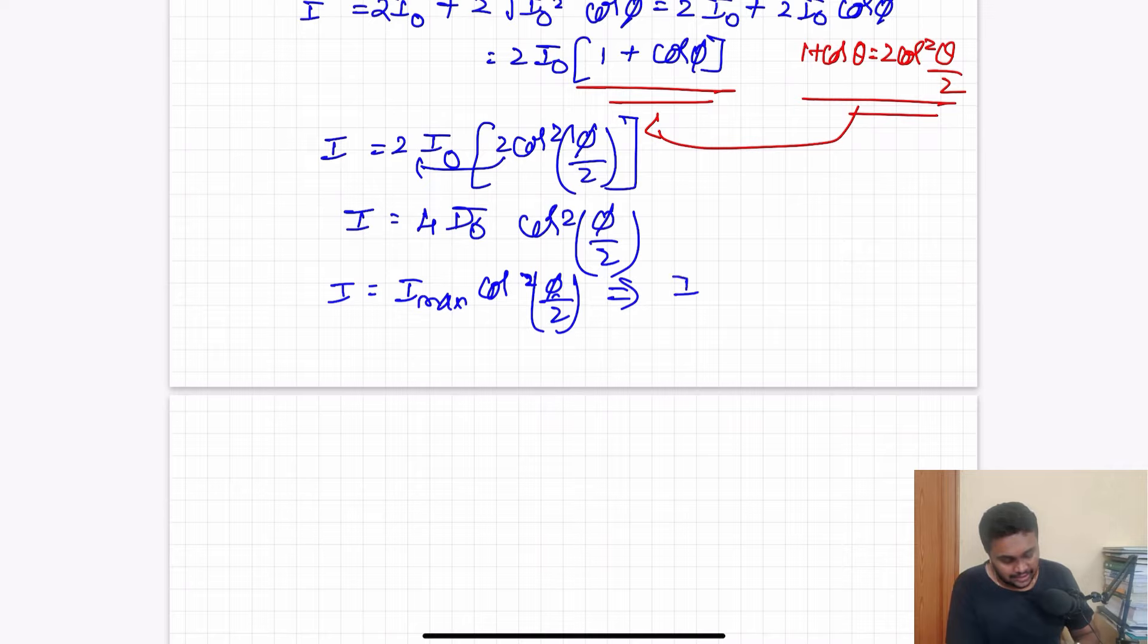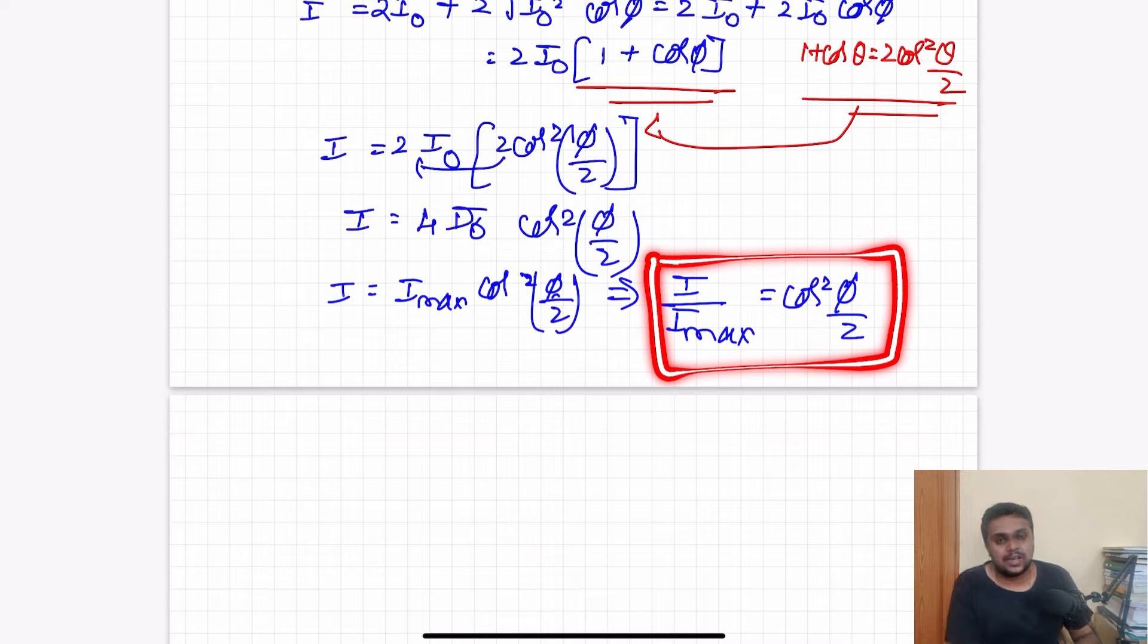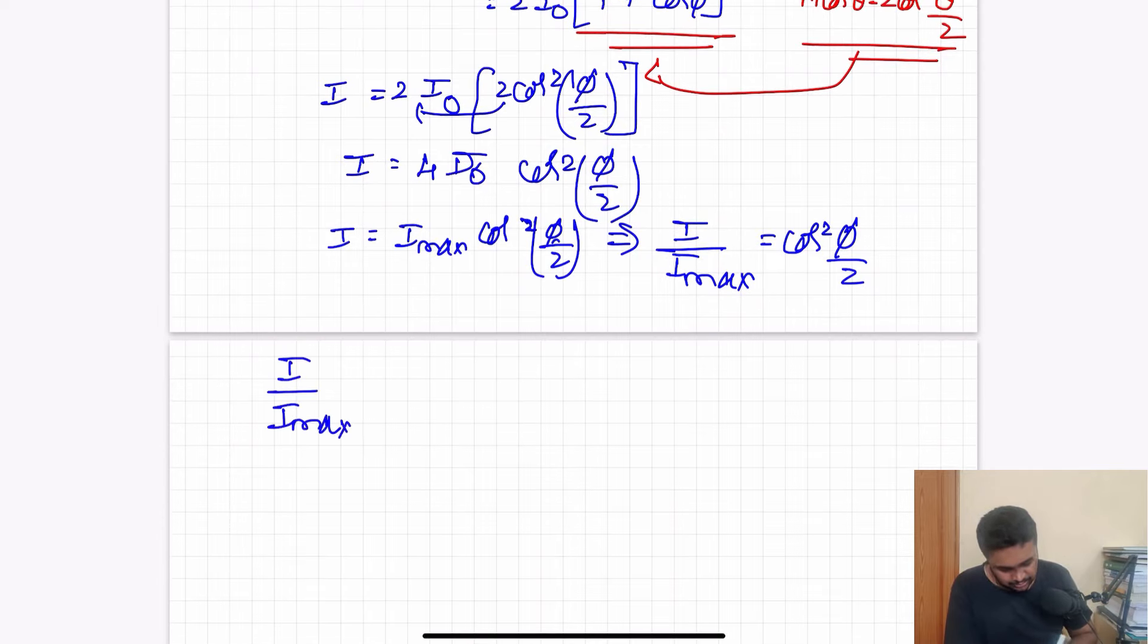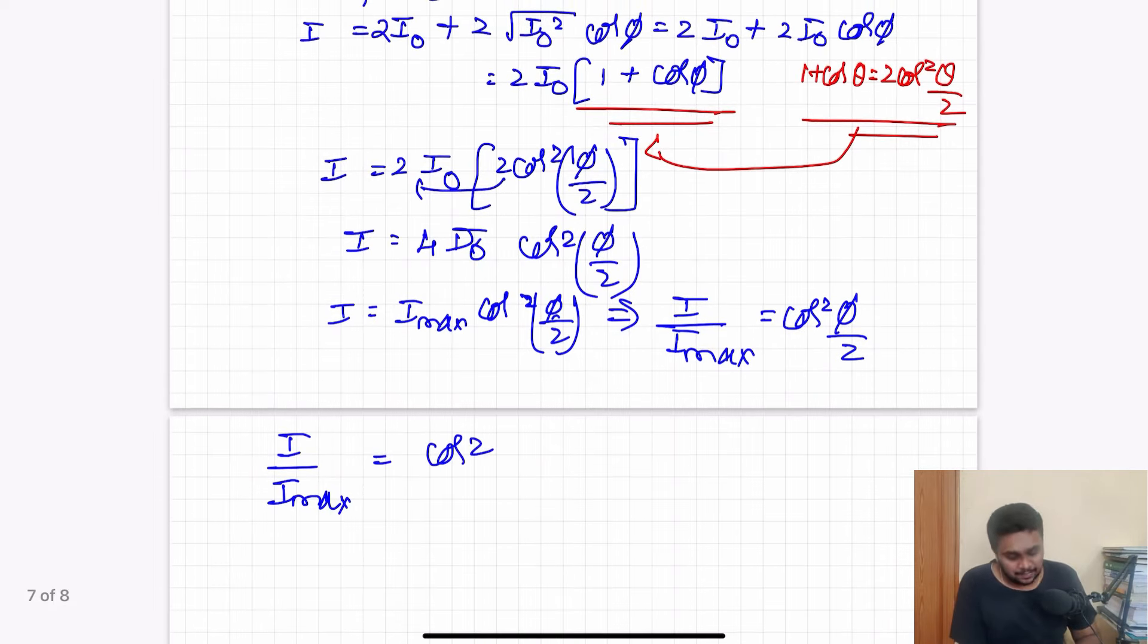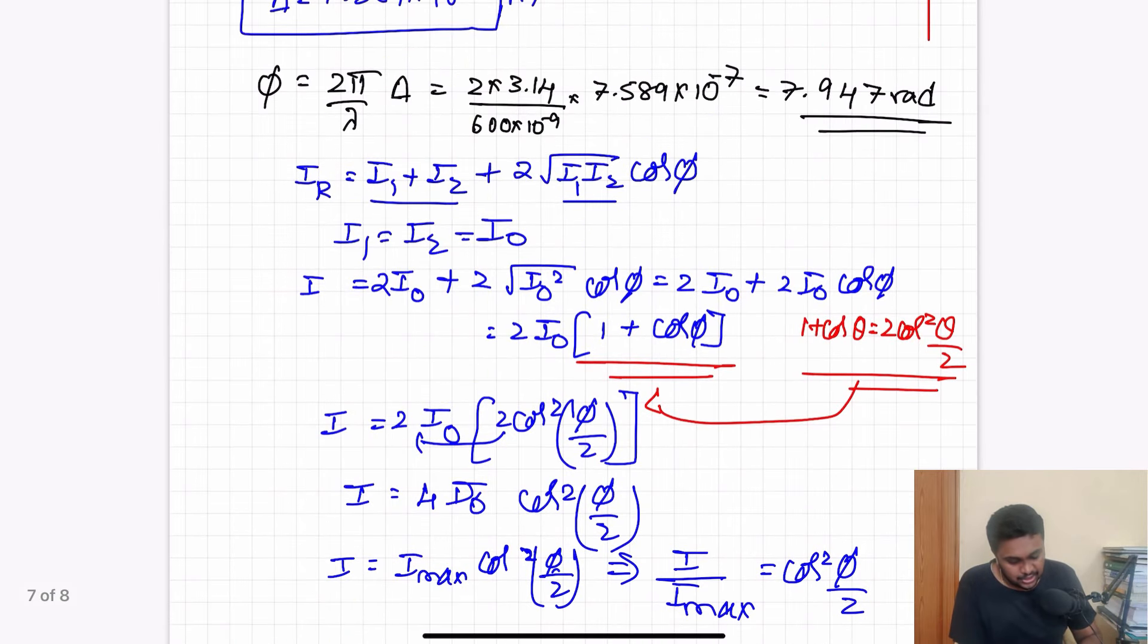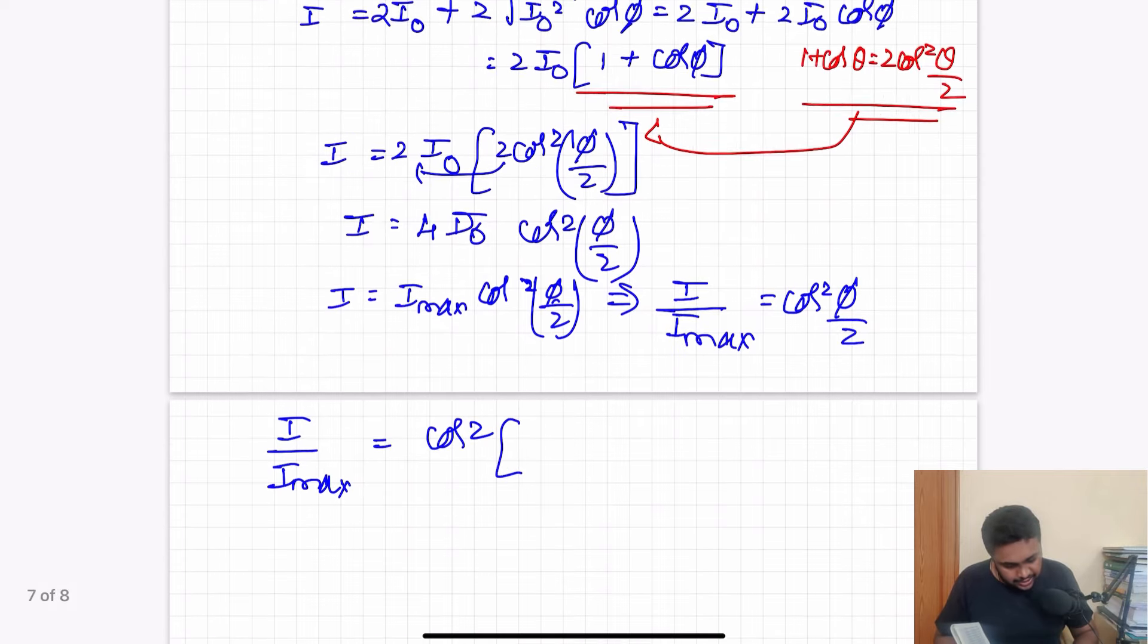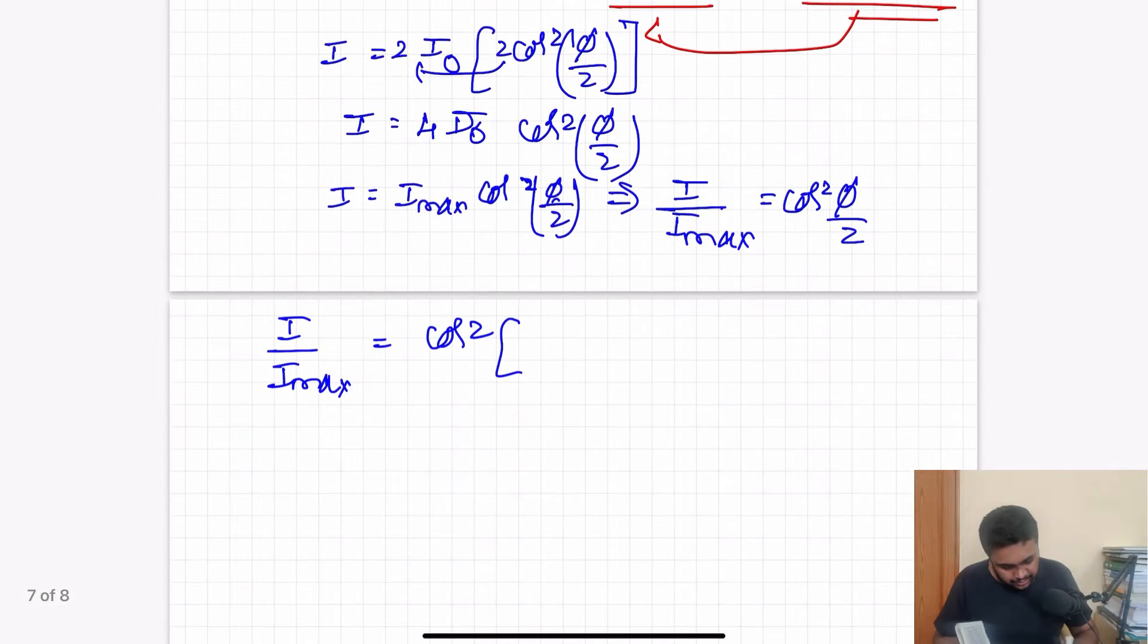I by i max, this will be equal to cos square phi by two. I've derived this equation here. Now we have phi, so cos square phi by two. I by i max is equal to cos square, phi is in terms of radians, so radians we cannot use cosines directly. This is in terms of degrees, so what I have to do is I have to multiply 7.947 into pi by 180 divided by 2.